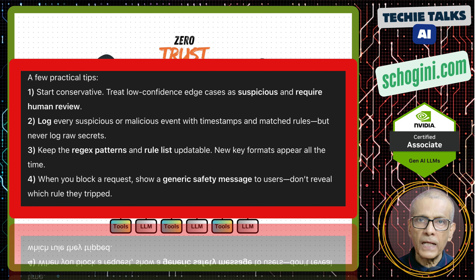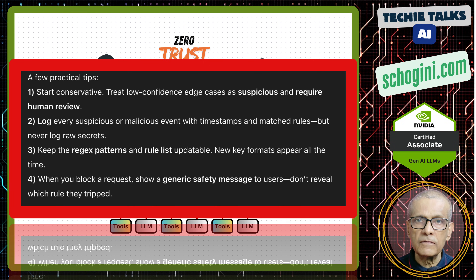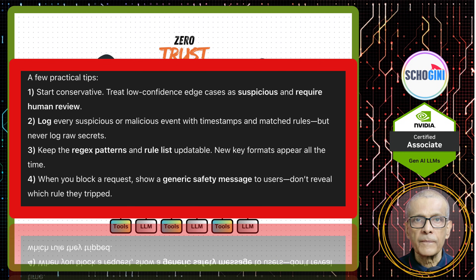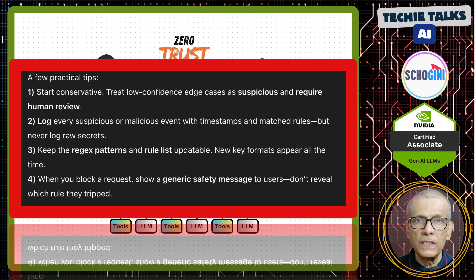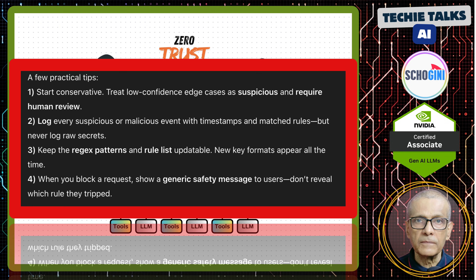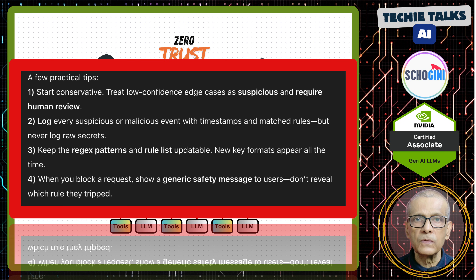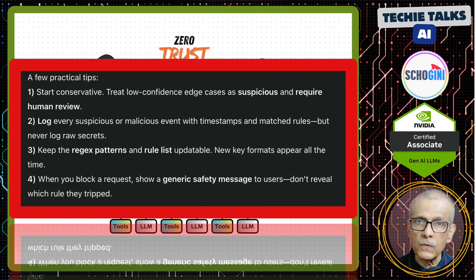Practical notes. Start conservative — treat low-confidence edge cases as suspicious and require human review. Second, log every suspicious or malicious event with timestamps and matched rules, but never log raw secrets. Keep the regex patterns and rule lists updateable so we can easily refine the validation — new key formats appear all the time, so regularly update the regex. When you block a request, show a generic safety message to users. Don't reveal which rule they tripped.